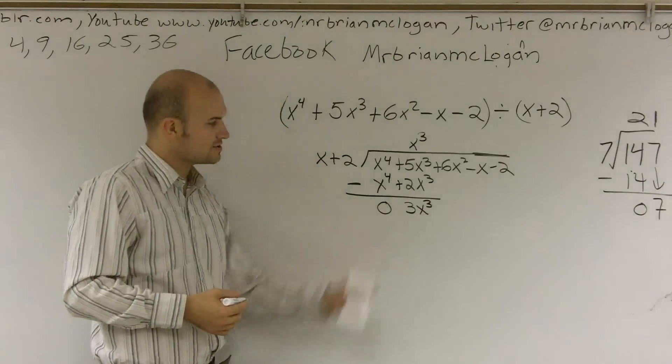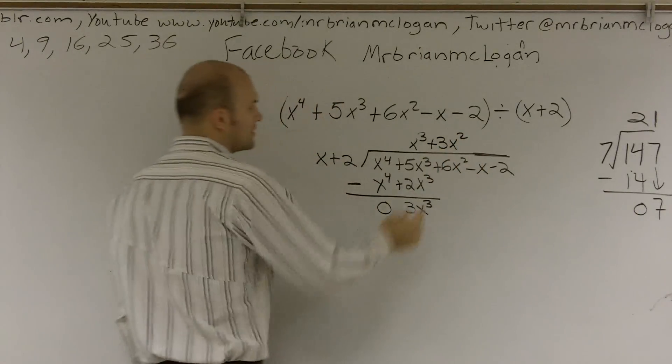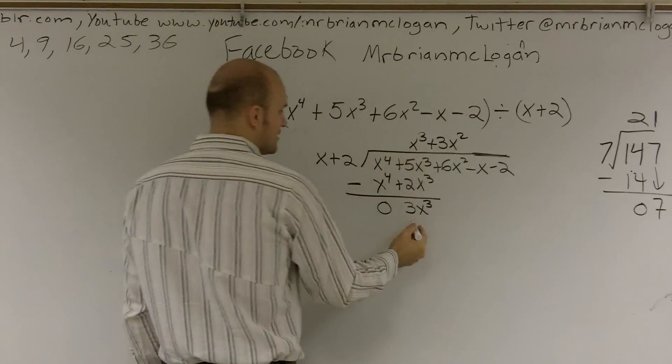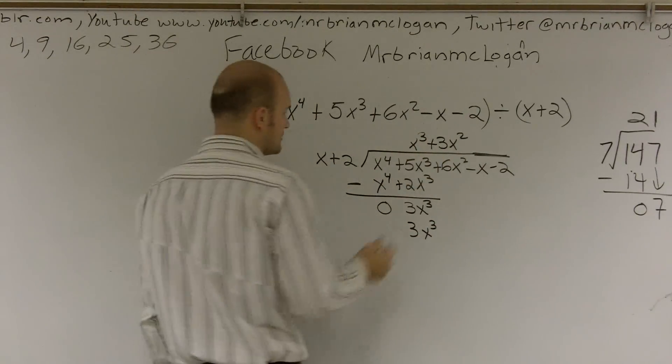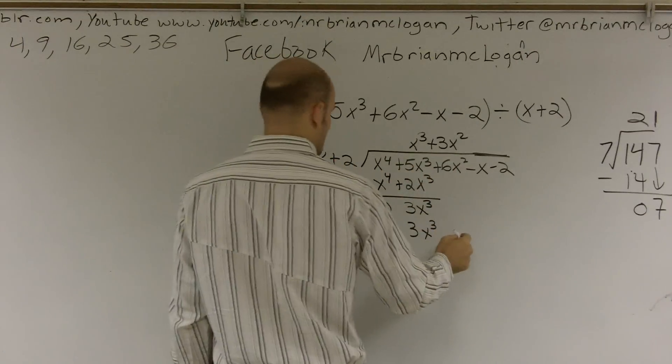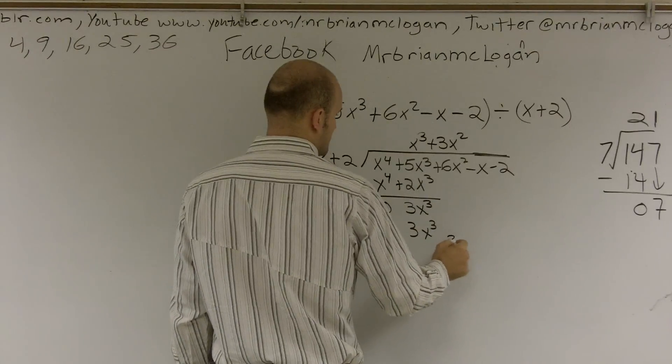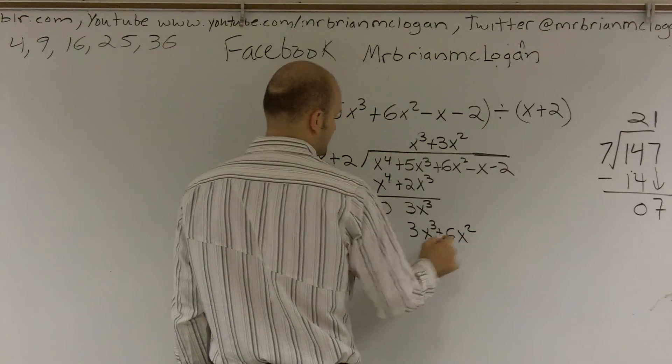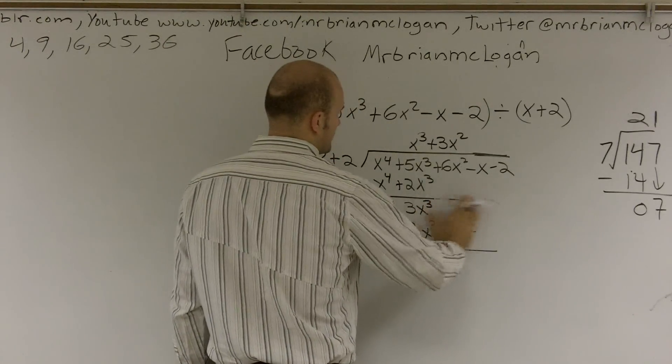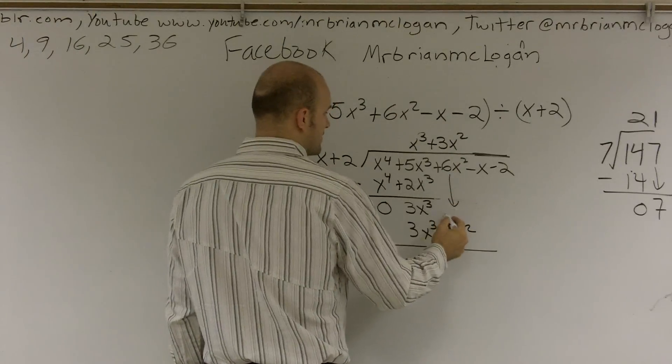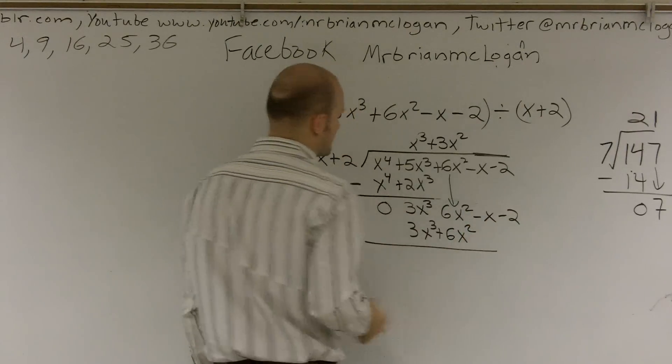So then we can say x goes into 3x cubed, 3x squared times. Then I multiply 3x squared times x. That's going to give me 3x cubed. 3x squared times 2 gives me 6x squared. You bring down 6x squared. Yes.